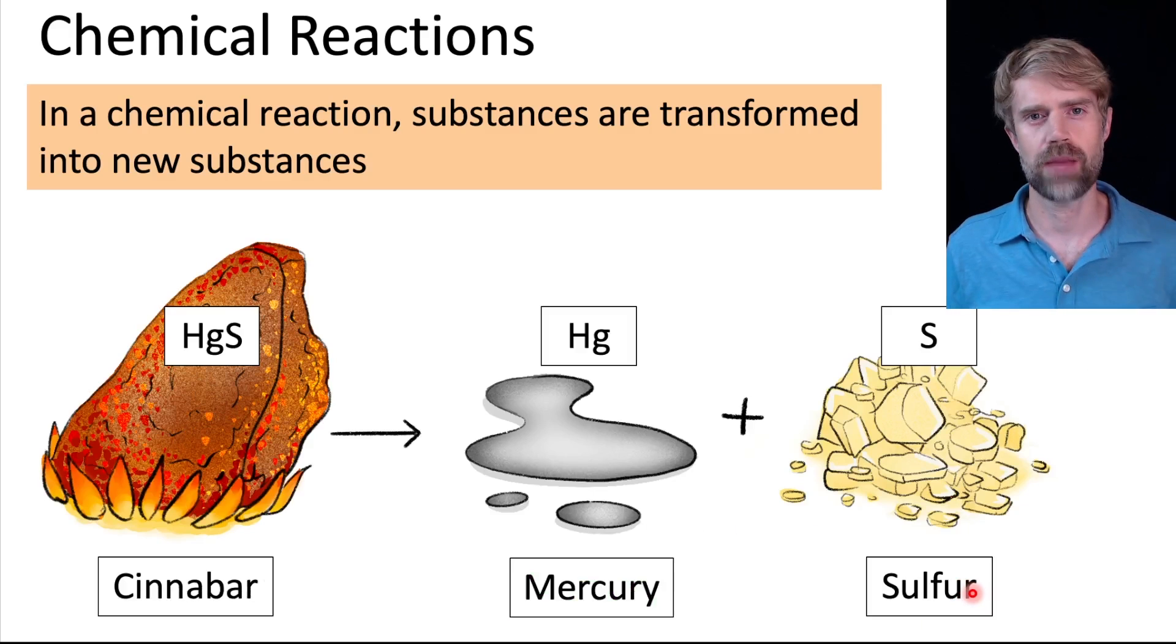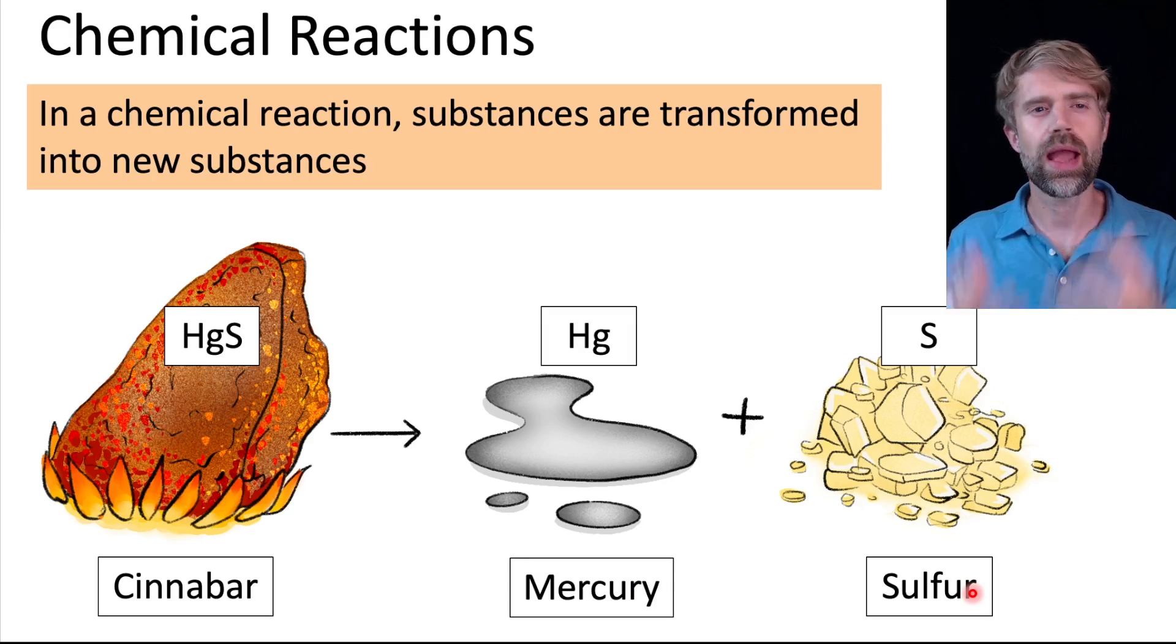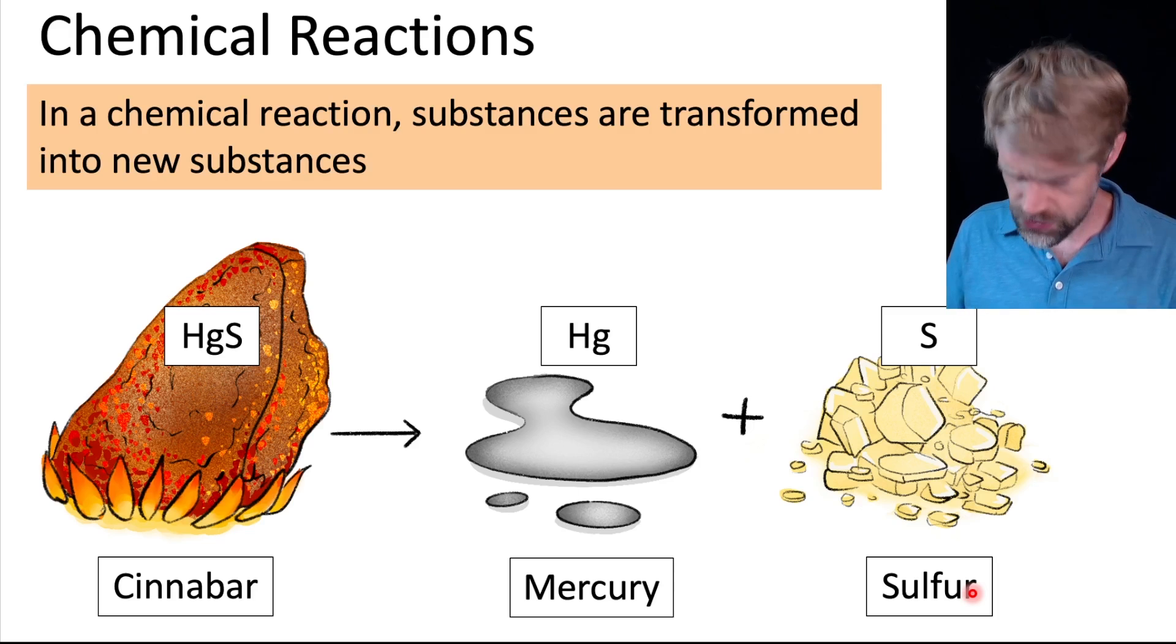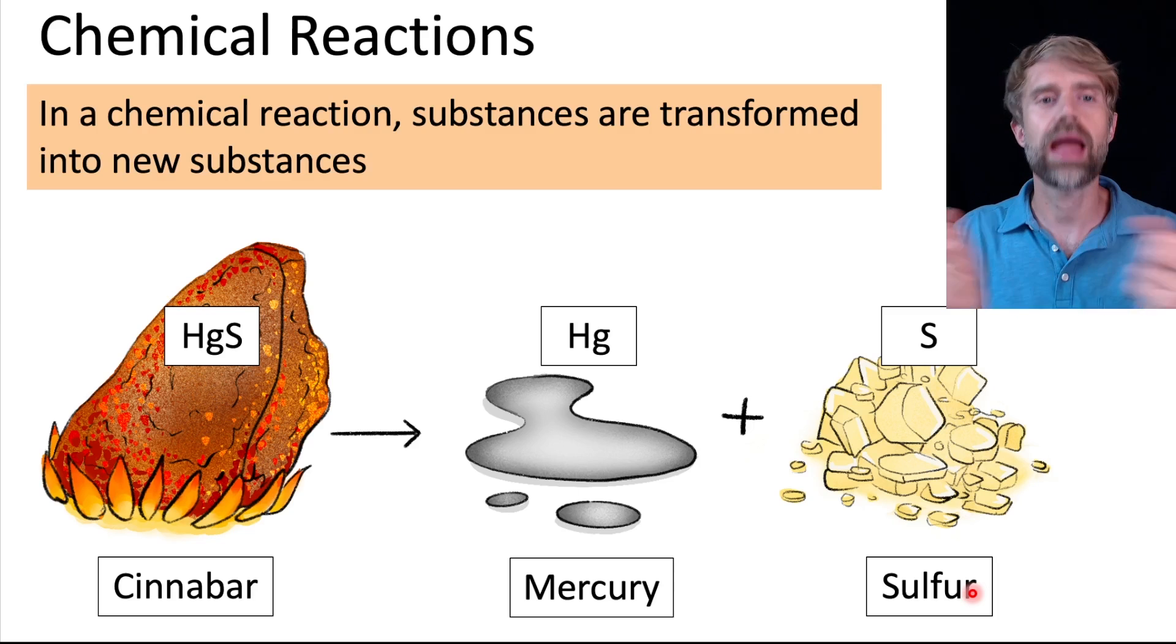One more thing to know about chemical reactions. So far, we've seen two reactions where elements react to produce compounds, where they come together. But there are millions of other chemical reactions where all sorts of different things can happen. For example, sometimes compounds break apart into elements.